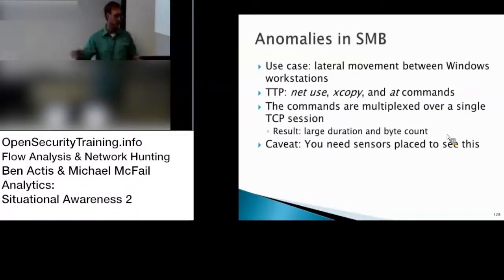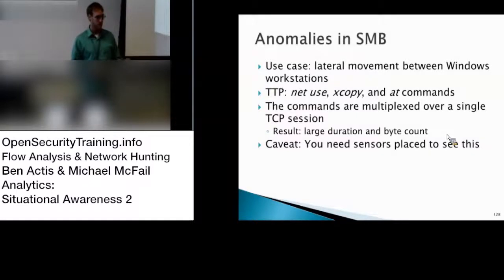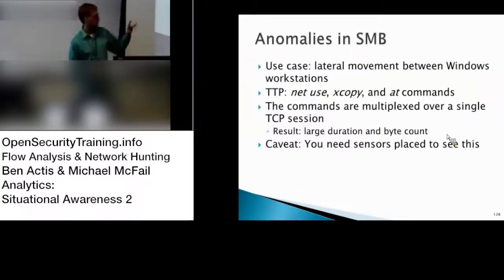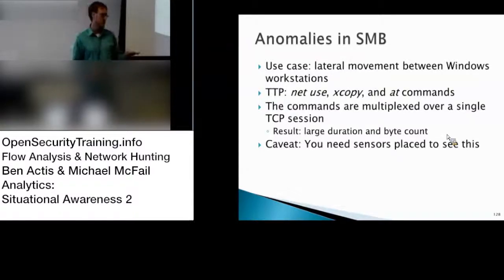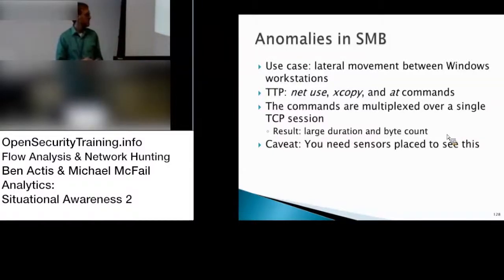SMB is popular for lateral movement because it's built into Windows, and attackers can do something called pass-the-hash — taking Windows credentials from memory, dumping the hash or brute-forcing the password, then using those credentials to connect to another machine over SMB and remotely execute code as another user. A common technique is using the net use command to connect to another machine, xcopy to move a binary or batch file over, and the at command (like cron on Windows) to remotely execute that file. From a network perspective, if you're remotely executing commands over a command line, they'll all go over the same TCP stream, resulting in a relatively large byte count and duration.